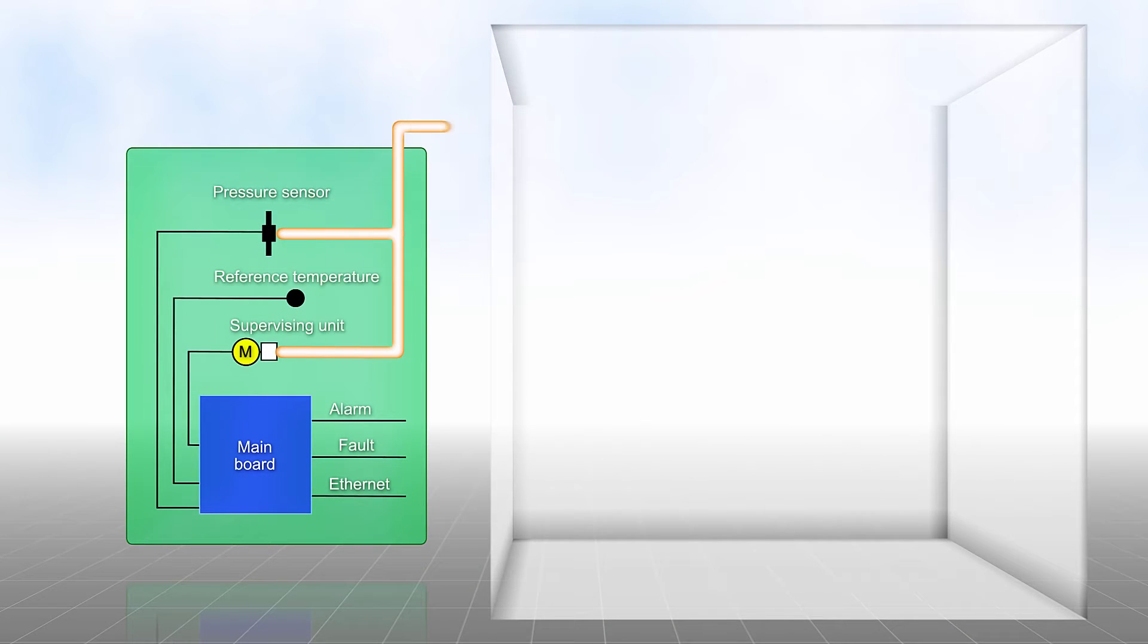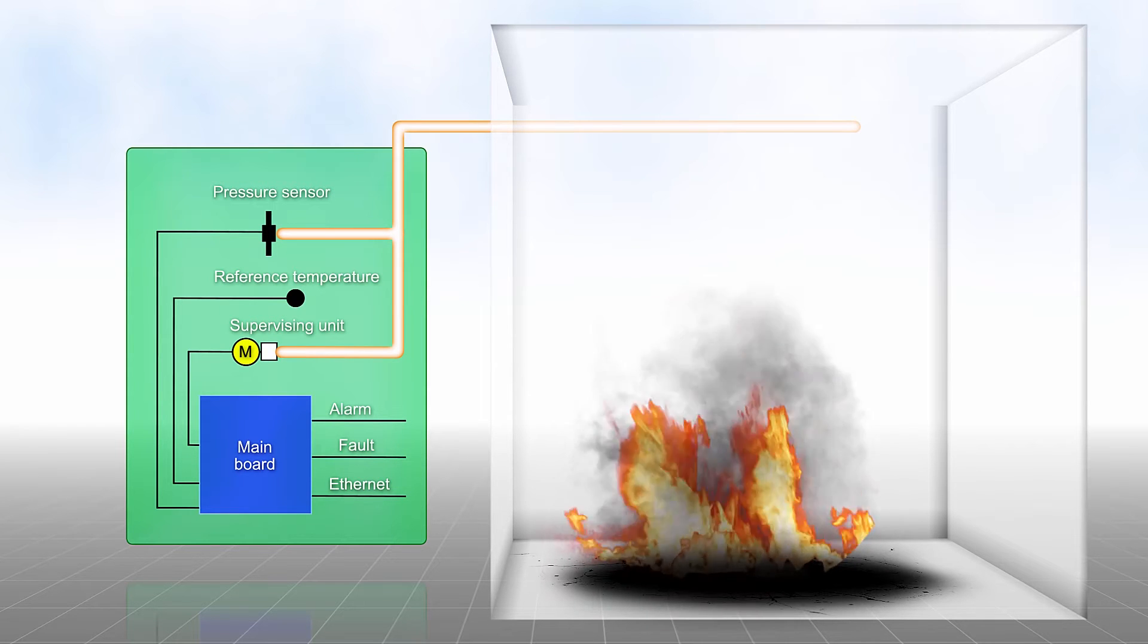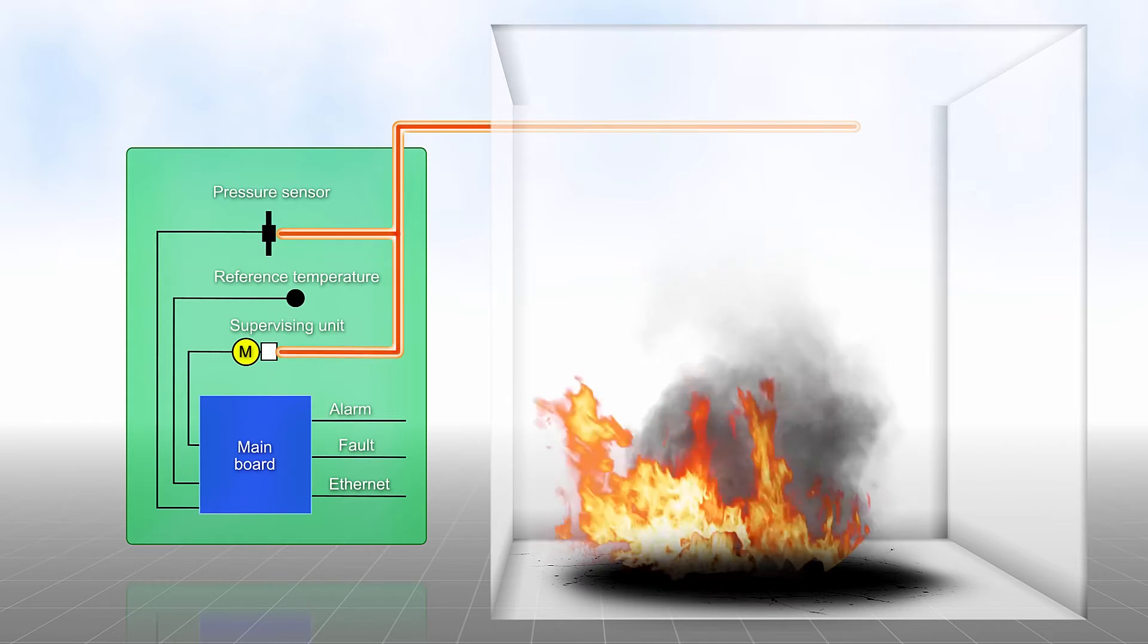The operating principle is simple and reliable. Air-filled sensing tubes are laid in a room to be monitored. If the temperature increases, then the pressure also increases in a closed sensing tube.